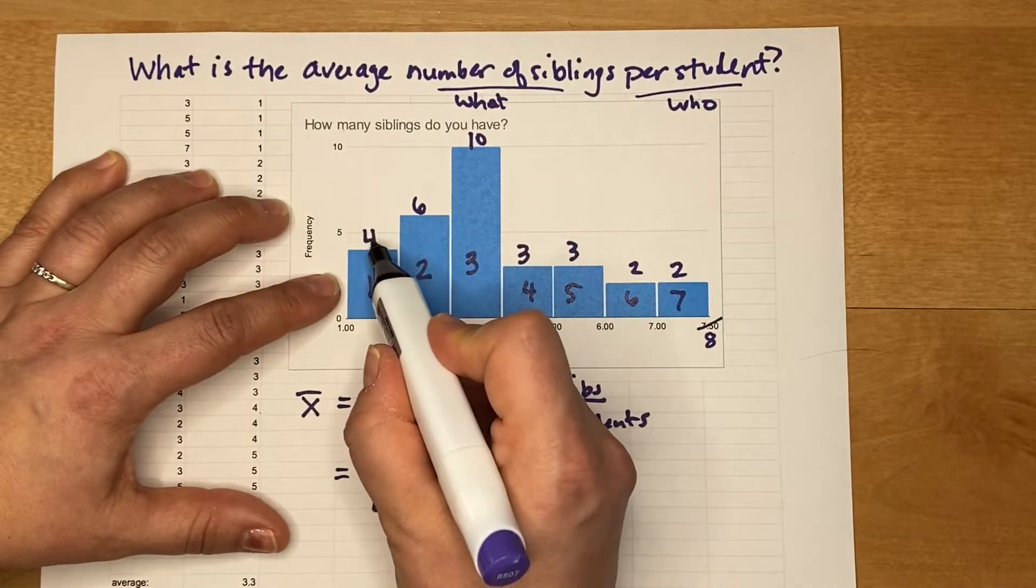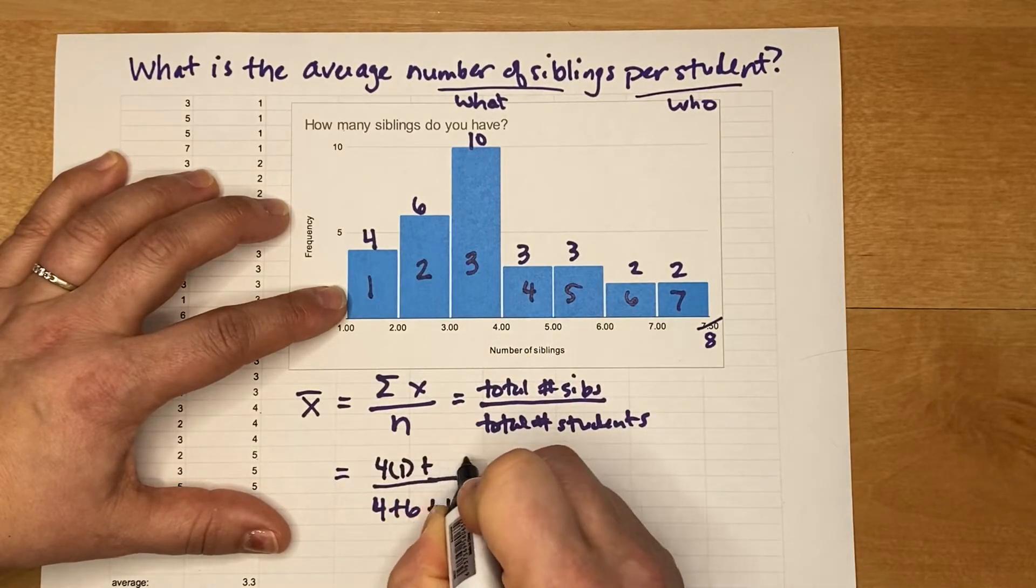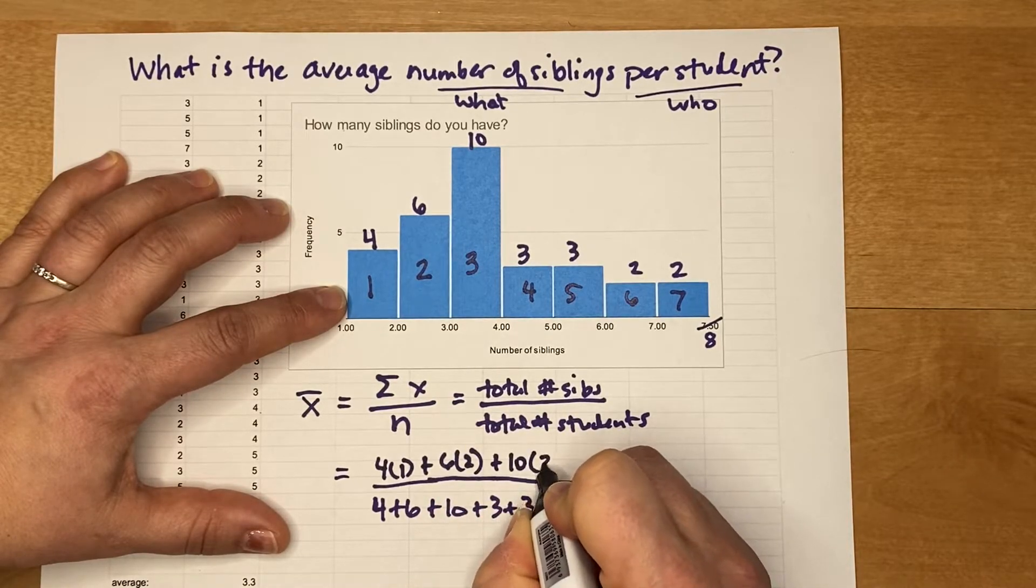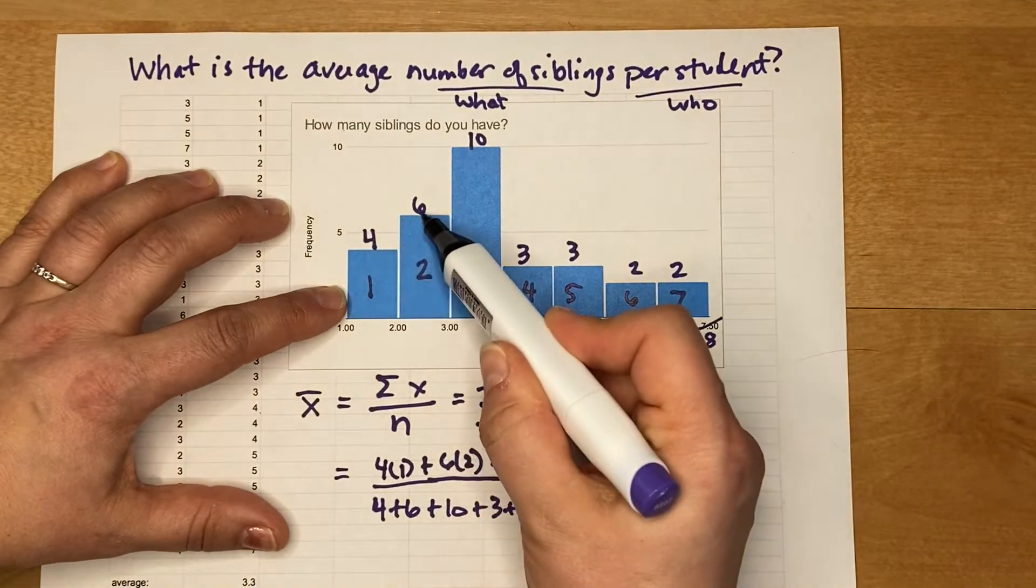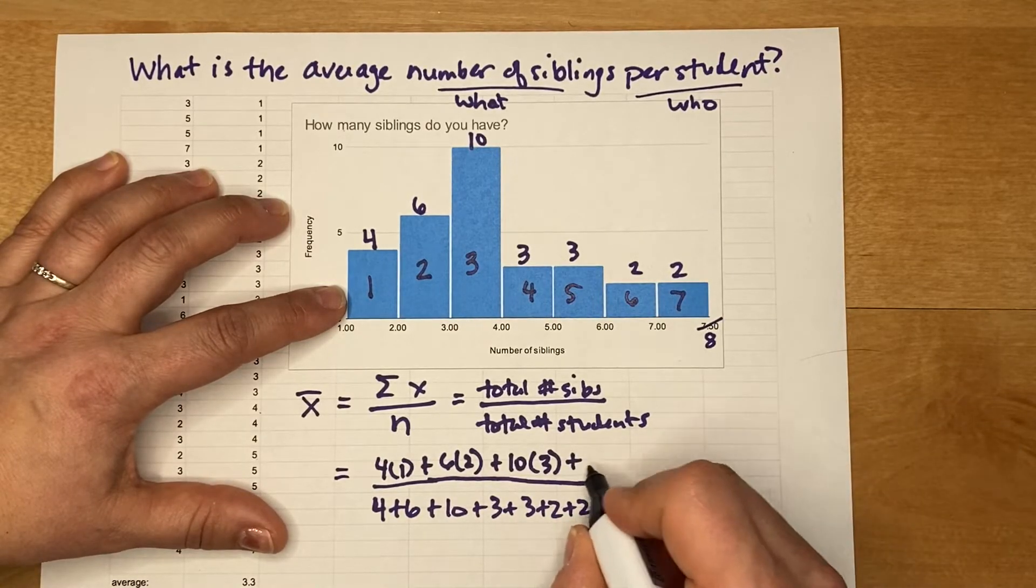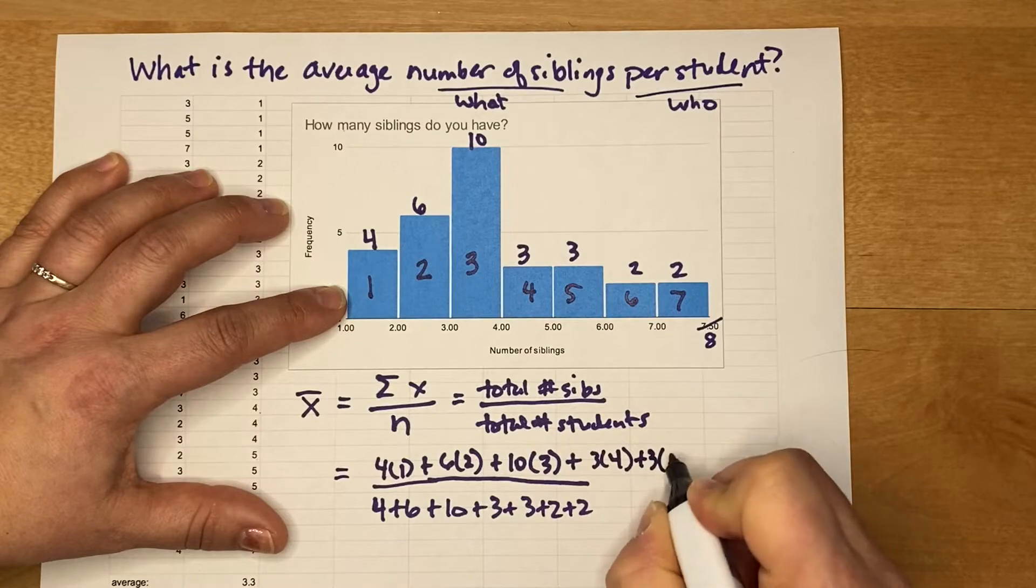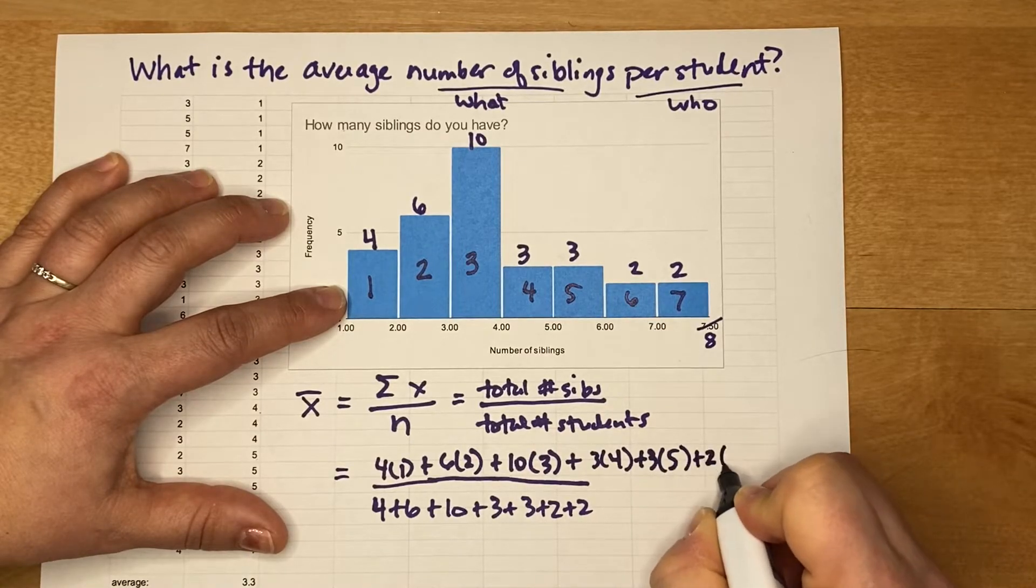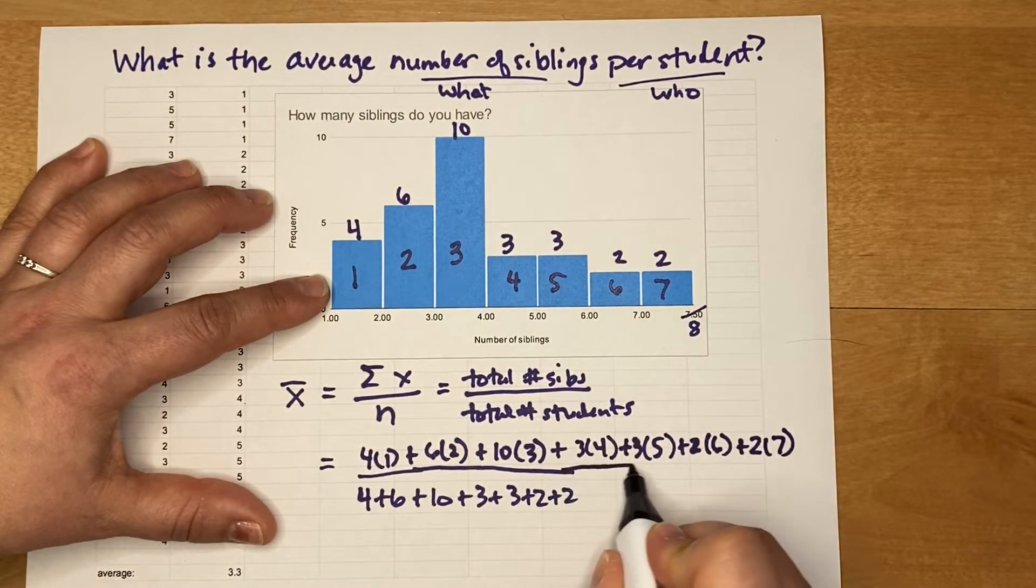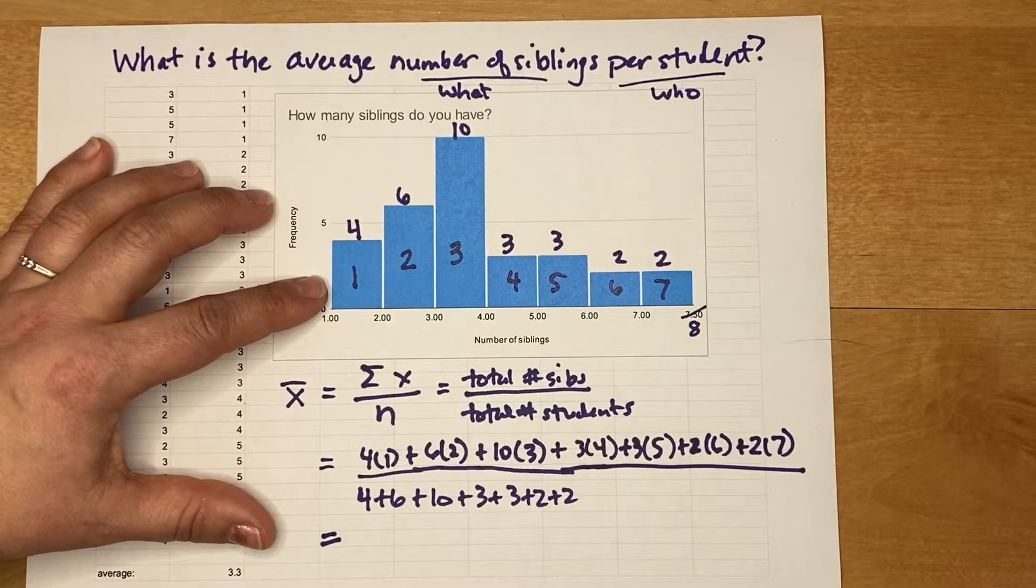So the total number of siblings is going to be a product of this count multiplied by how many siblings there are. So 4×1 + 6×2. We're really computing a weighted average here, and the weight is based on how much repetition there is in our numbers. So it's kind of like a fast way to do addition is multiplication. I've just organized all of my data. So 10×3 + 3×4 + 3×5 + 2×6, and getting near the end, + 2×7.